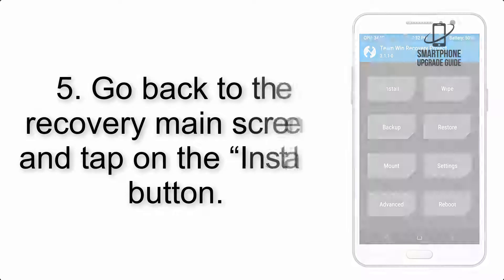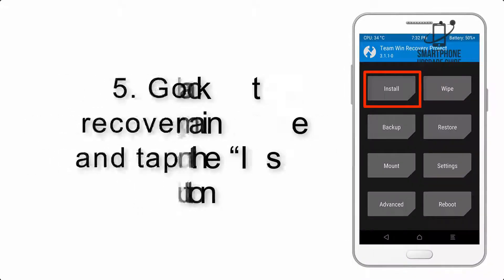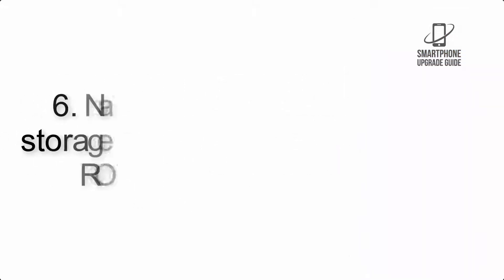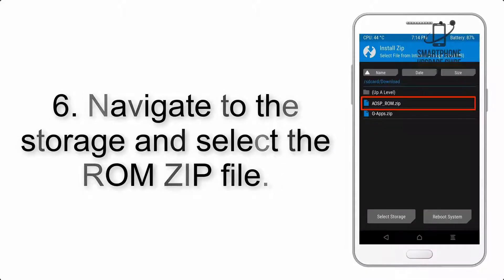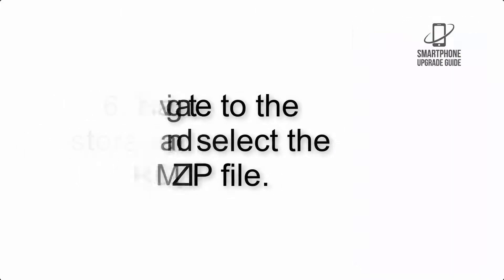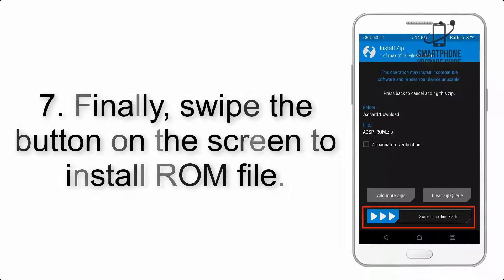Step 4: Swipe the button to wipe the device. Step 5: Go back to the recovery main screen and tap on the Install button. Step 6: Navigate to the storage and select the ROM zip file.